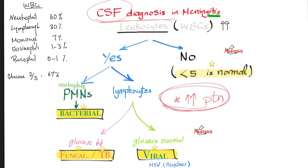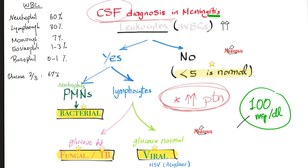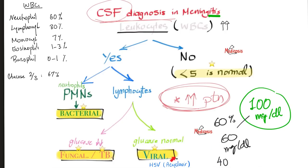How do we know if CSF glucose is low or normal? If a patient has 100 mg/dL of serum glucose, normal CSF glucose should be 60% of that — 60 mg/dL. If the CSF glucose is 40, that's low, suggesting something is consuming it: bacterial, fungal, or tuberculous infection. If CSF glucose is 60 — normal — with leukocytosis, this points to viral meningitis.